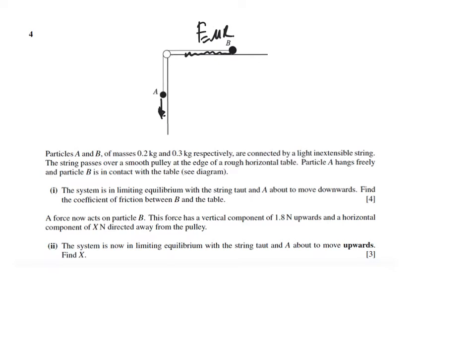The system is in limiting equilibrium. A is 0.2 kg, so that's 2 newtons, and this is 3 kg which is 3 newtons, so that's your R. Find the coefficient of friction between B and the table. F equals to mu R, that's the formula for friction limiting equilibrium, meaning it is about to move.